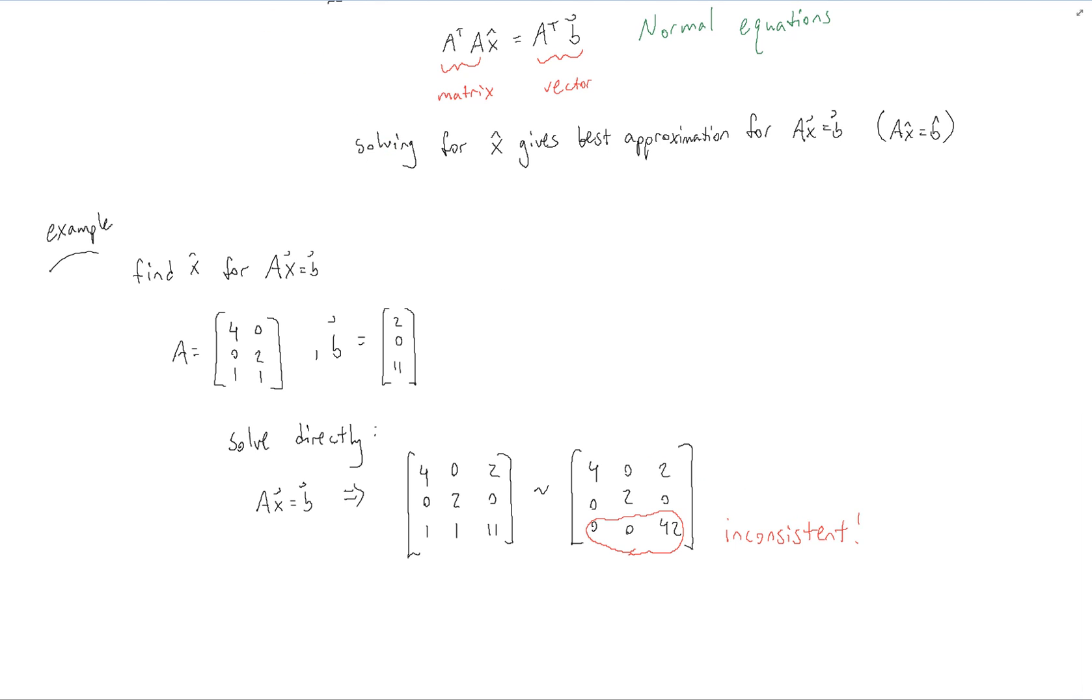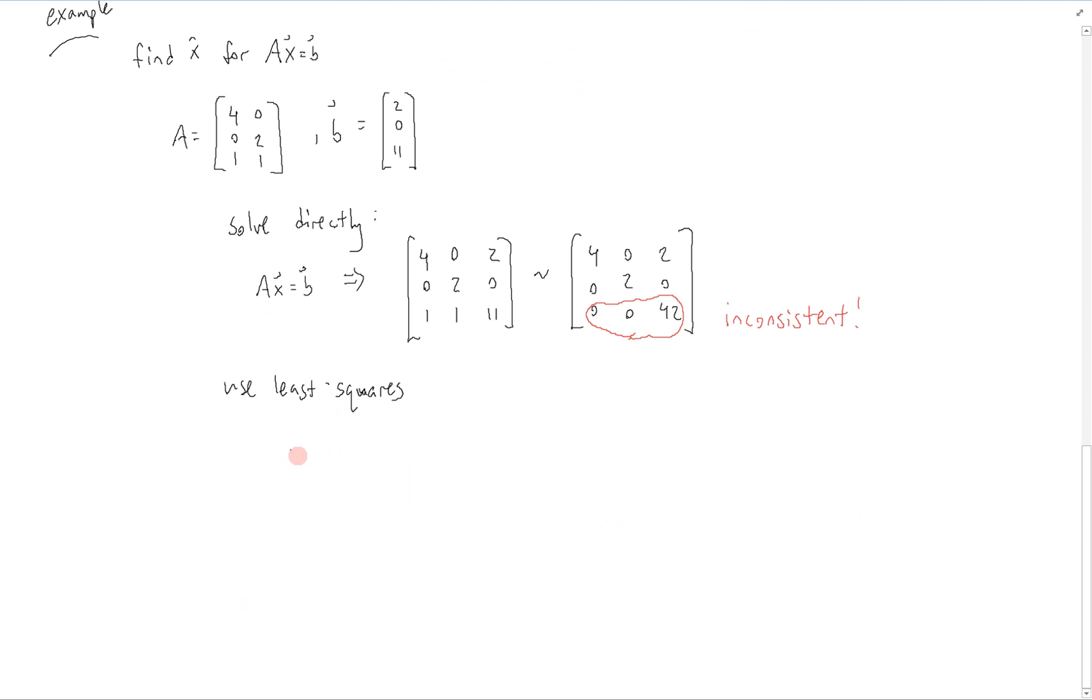So instead, we're going to use what we just learned. We're going to use least squares. So now we're using the equation a transpose a times x hat is equal to a transpose b. So we find each one of these components. A transpose a is equal to 17, 1, 1, 5. A transpose b is equal to 19, 11.